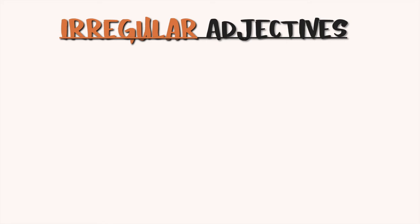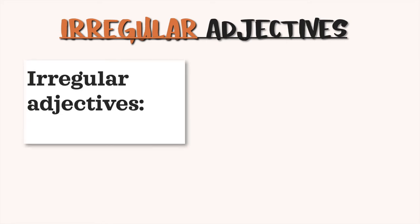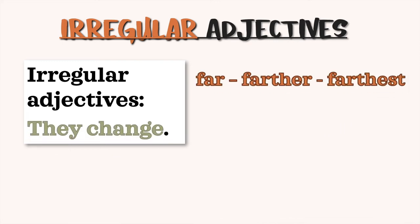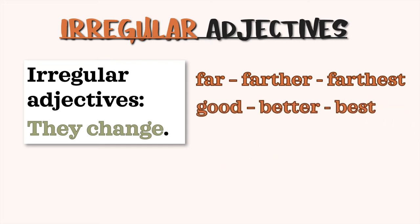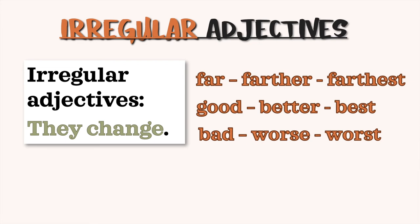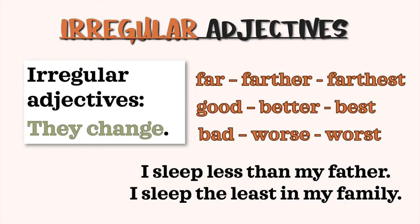Irregular adjectives change completely. For example: far → farther → farthest, or further → furthest. Good → better → best. Bad → worse → worst. Less and the least are the comparative and superlative of little. For example: I sleep less than my father. I sleep the least in my family.